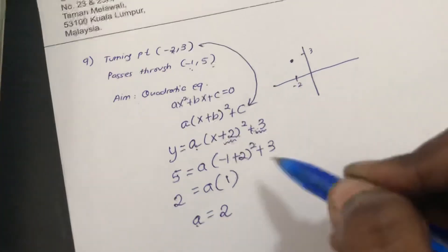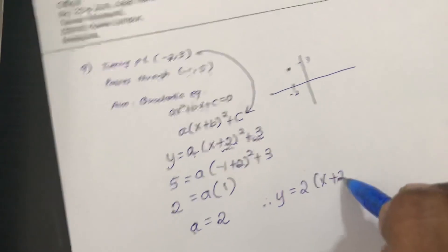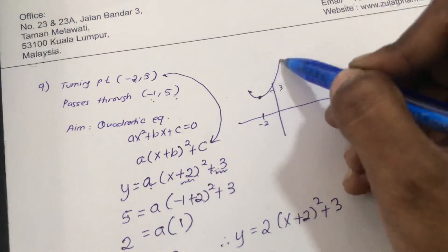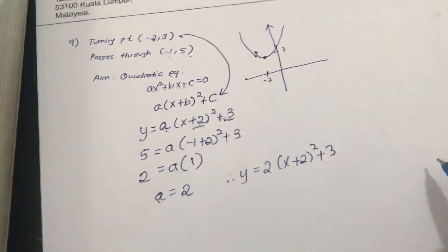So since a value is 2, your equation is 2(x + 2)² + 3. And I know it is a happy one and then I go and do something like this. So if you visualize, this is what you get.